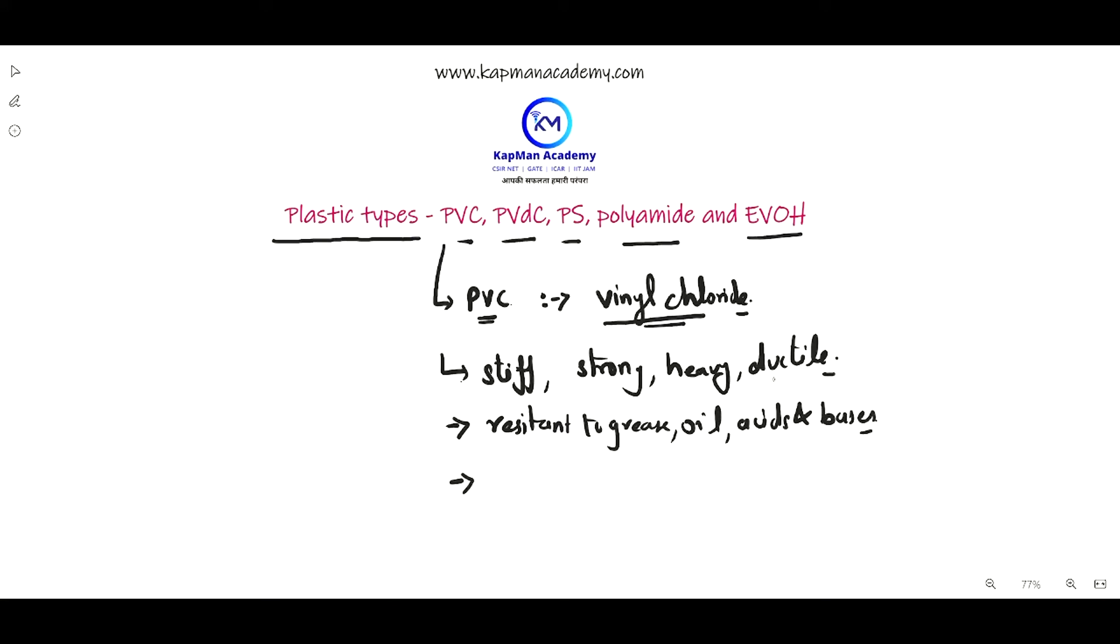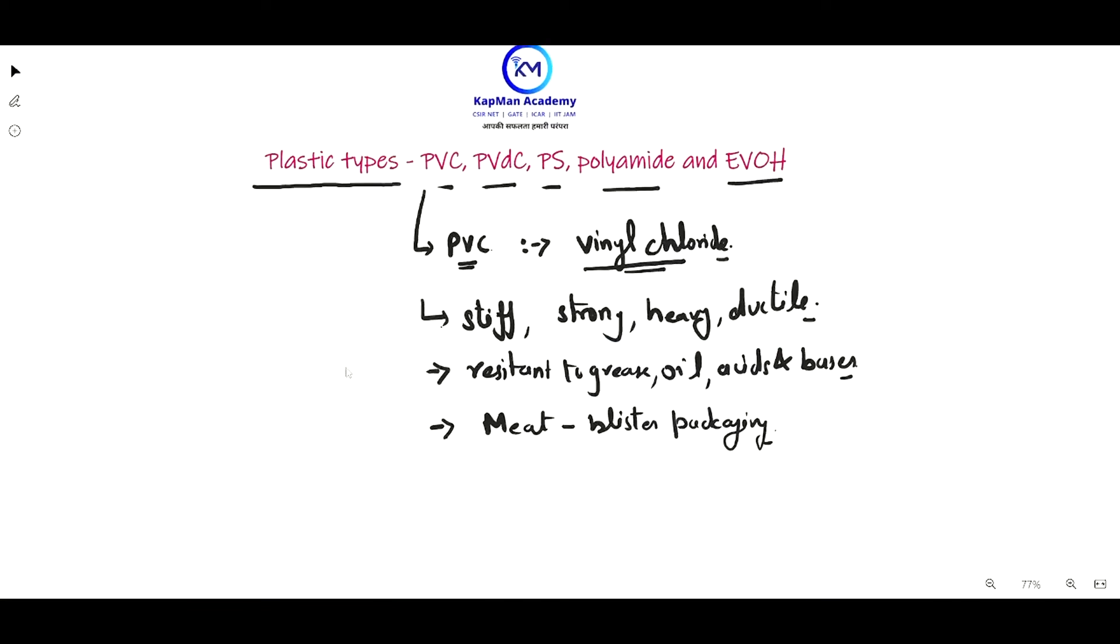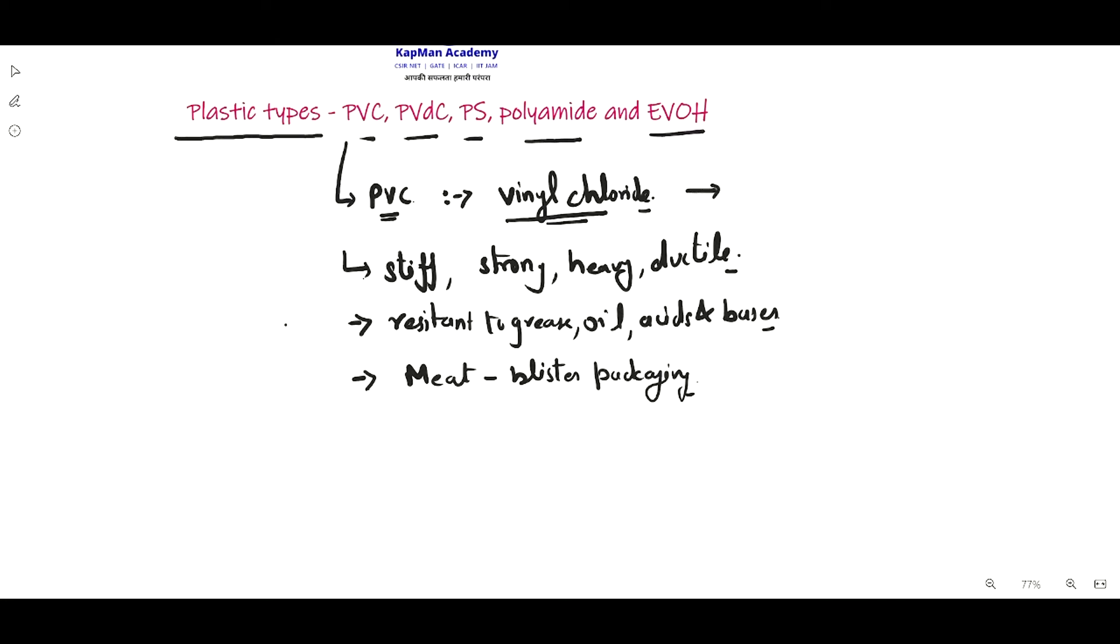PVC is basically used in meat packaging, such as blister packaging. However, the problem with polyvinyl chloride is that it has a hazardous compound. The chloride content is hazardous and causes different types of environmental problems. Due to that, it is not used much in food packaging.